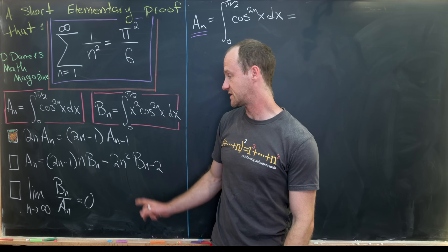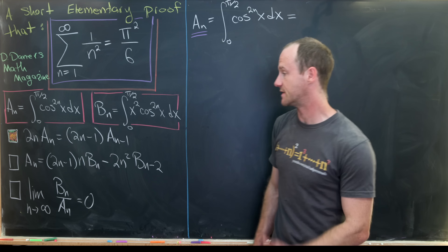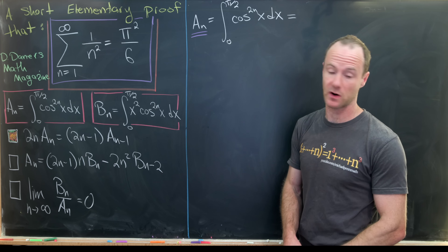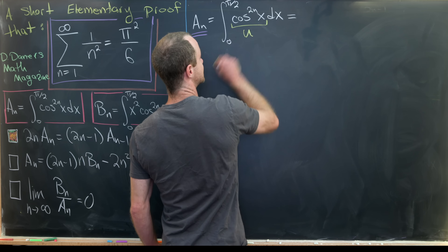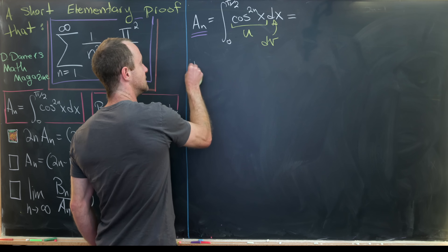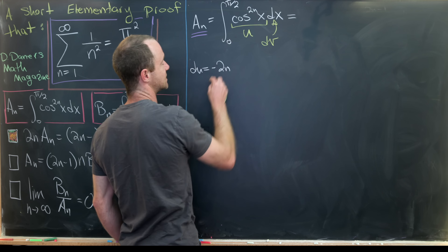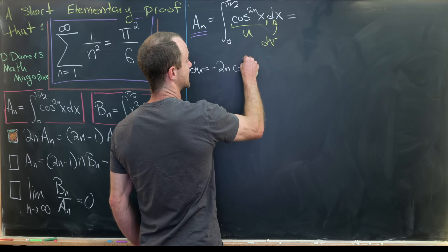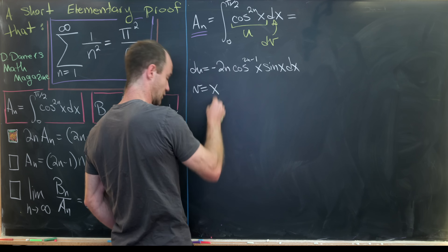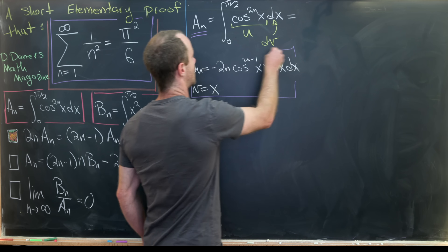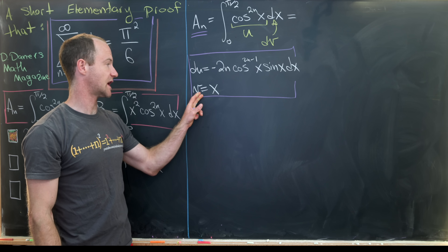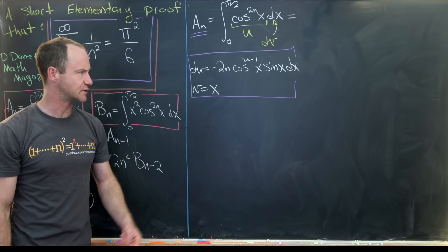Now we move to our second tool: a recursion relating a_n and b_n. Starting again with a_n, we use integration by parts with u = cosine^{2n}(x) and dv = dx. That means du = −2n·cosine^{2n-1}(x)·sine(x) dx, and v = x. The boundary term u·v evaluated at 0 and π/2 cancels out, leaving just the integral of v·du.